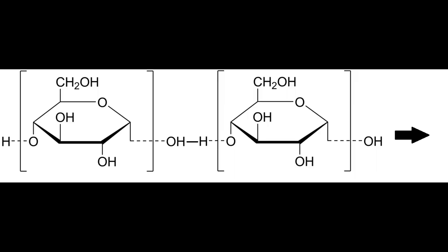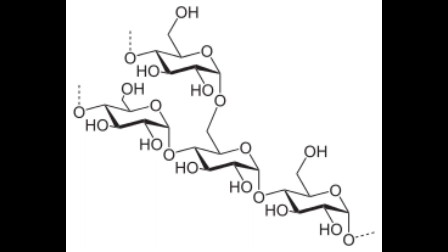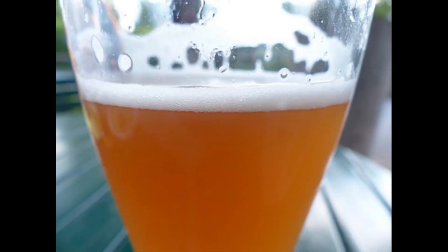The enzyme beta-amylase is very specific. It begins at one end of the carbohydrate chain and breaks it down into multiple units. Alpha-amylase is more like a shotgun and will hit anywhere in any one of the chains, breaking them down into smaller units. Beta-amylase is the important variable to consider when brewing, as this will define how fermentable the sugar you have added is — because it turns starch into maltose, whereas alpha-amylase only makes the starch chains available.